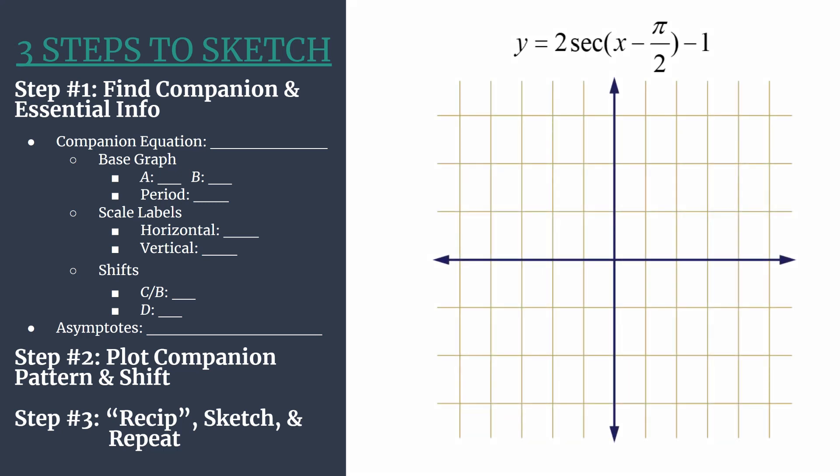Quick reminder of our general form for a shifted secant graph, it's y equals a secant bx minus c plus d. I always like to check that the input of the secant function does have that minus sign just so it's clear what our term c should be. In this case, it's just positive pi over 2. Let's go ahead and write out our companion equation. Same equation, just replace the secant with its reciprocal function, cosine. So we'll write 2 cosine x minus pi over 2 minus 1.